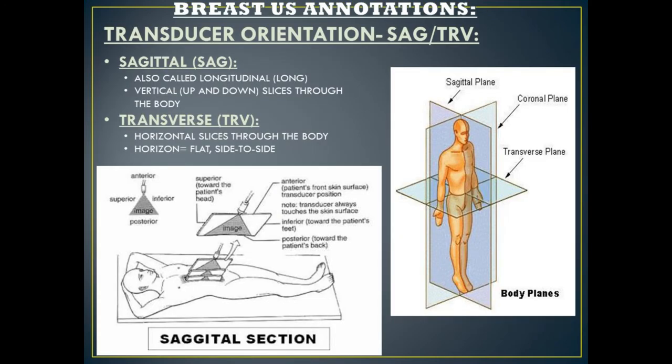The next method of annotating a breast ultrasound is transducer orientation. You can use either sagittal and transverse, or radial and anti-radial. A sagittal plane, abbreviated SAG, is also known as a longitudinal or long plane in the body — these are our vertical or up-and-down slices. A transverse plane, abbreviated TRV, represents our horizontal slices throughout the body. I like to think of the horizon, which is flat or side to side.